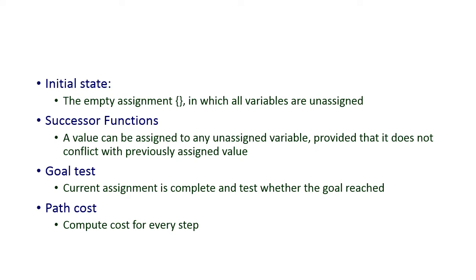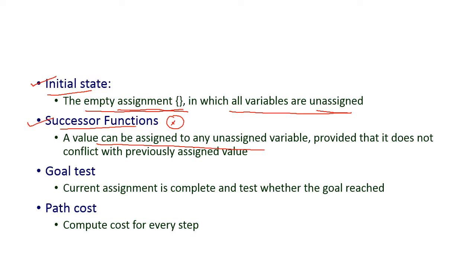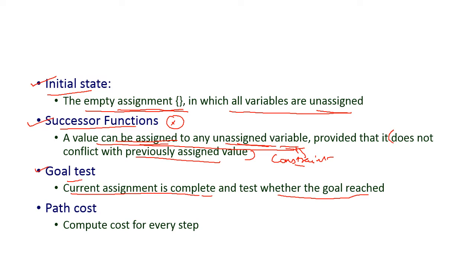The important terminologies used in CSP: First, the initial state should be an empty assignment in which all variables are unassigned. Second, the successor function — values can be assigned to any unassigned variable, but must not conflict with previously assigned values; this is the constraint. Third, the goal test — the current assignment should be complete, then we test whether we have reached the goal. Fourth, path cost — the cost of every step, which in CSP is almost always constant.